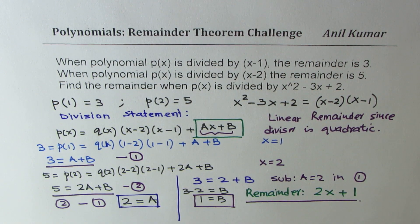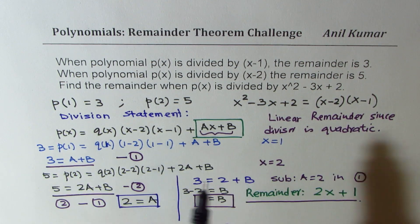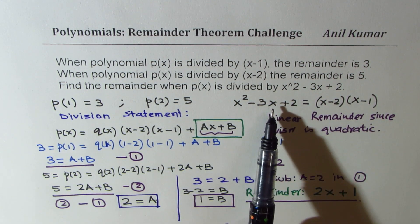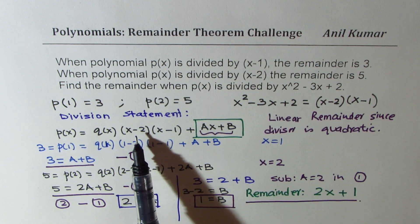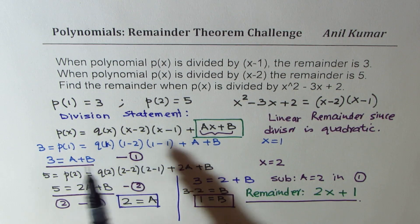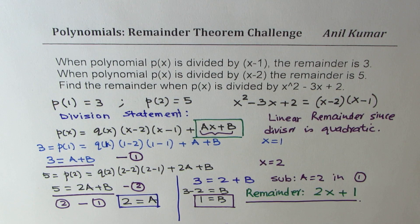So I hope Aishwarya, all the steps are absolutely clear. So we begin with the division statement, and the key is that the quadratic divisor can be factored. And these factors, for substituting their values, we do get the value of the polynomial and we can therefore find the remainder. So that is how we do such questions.